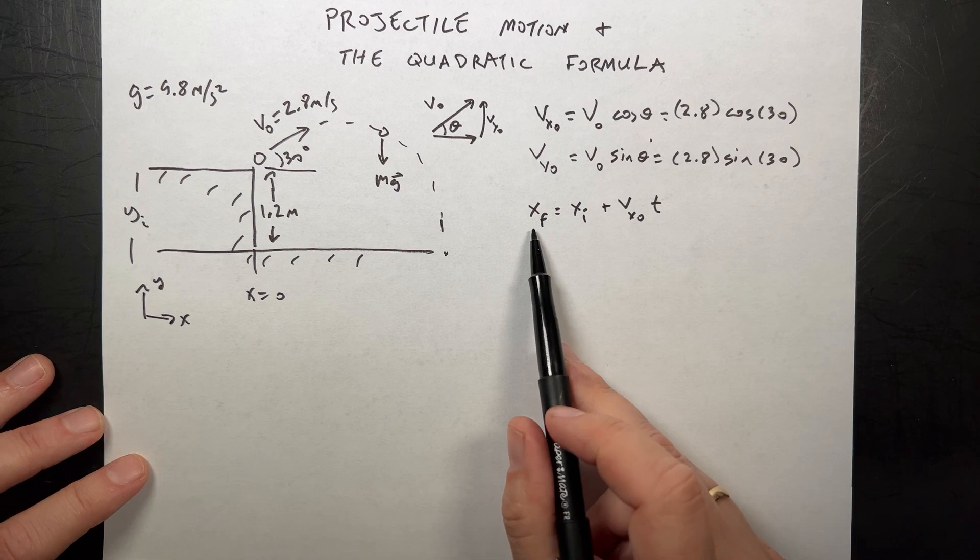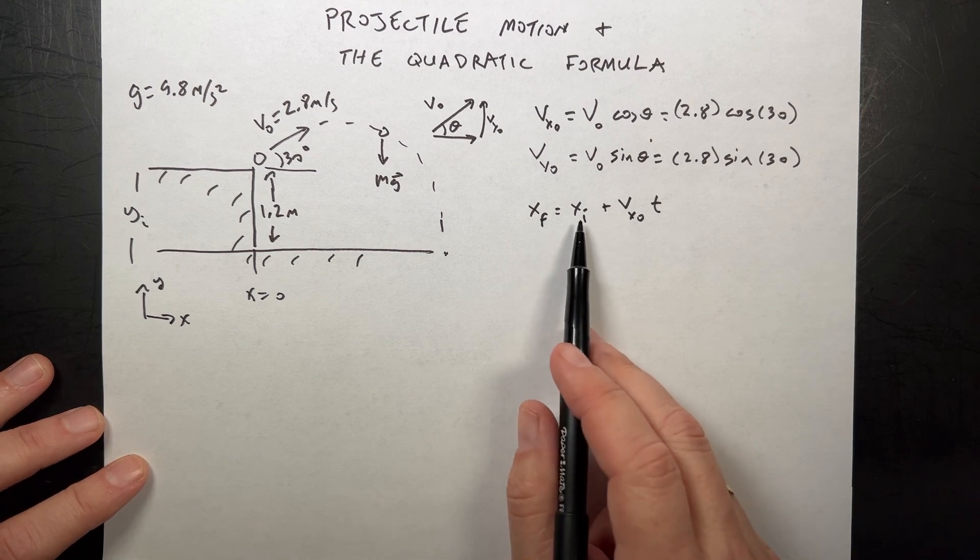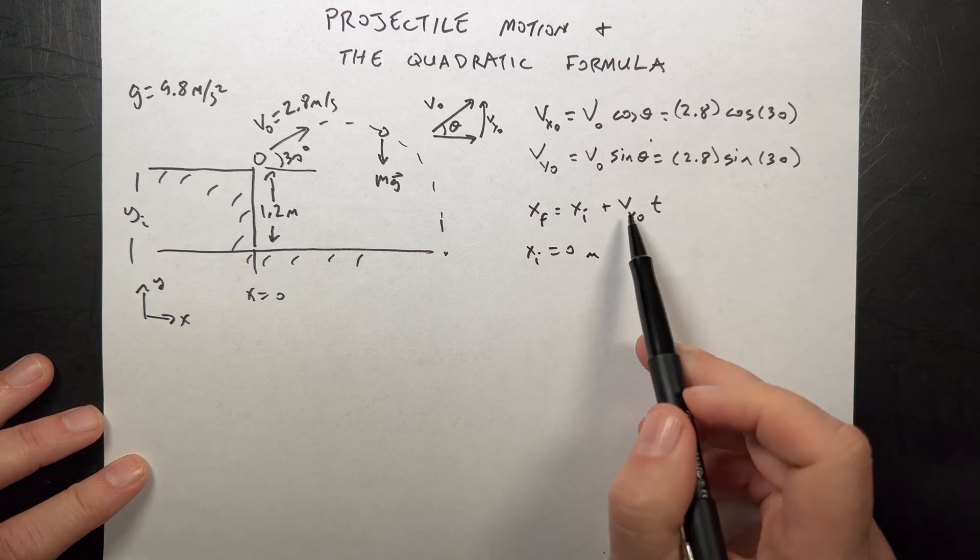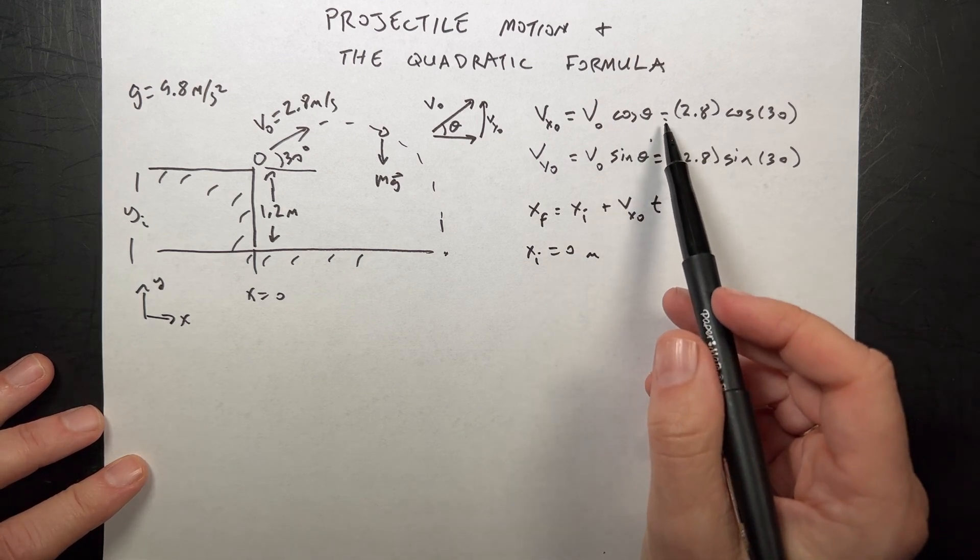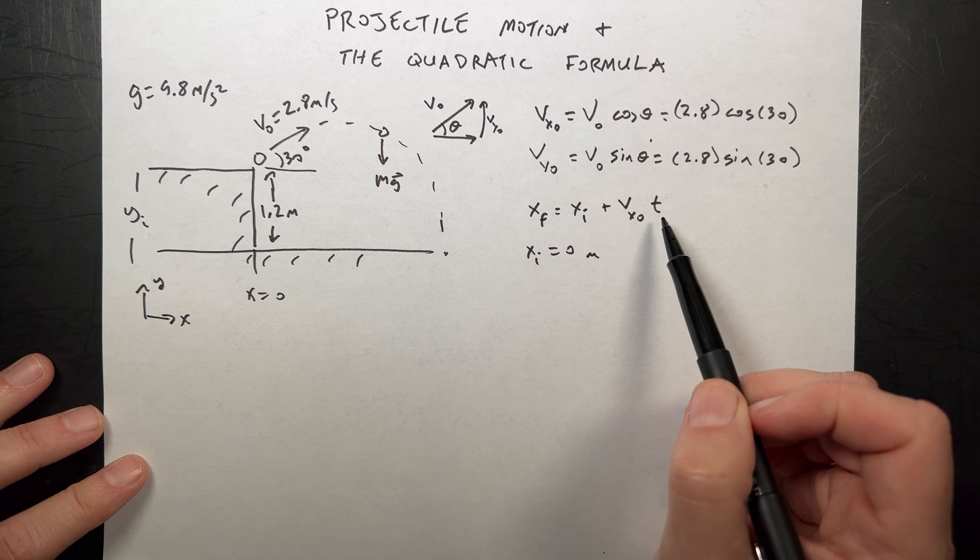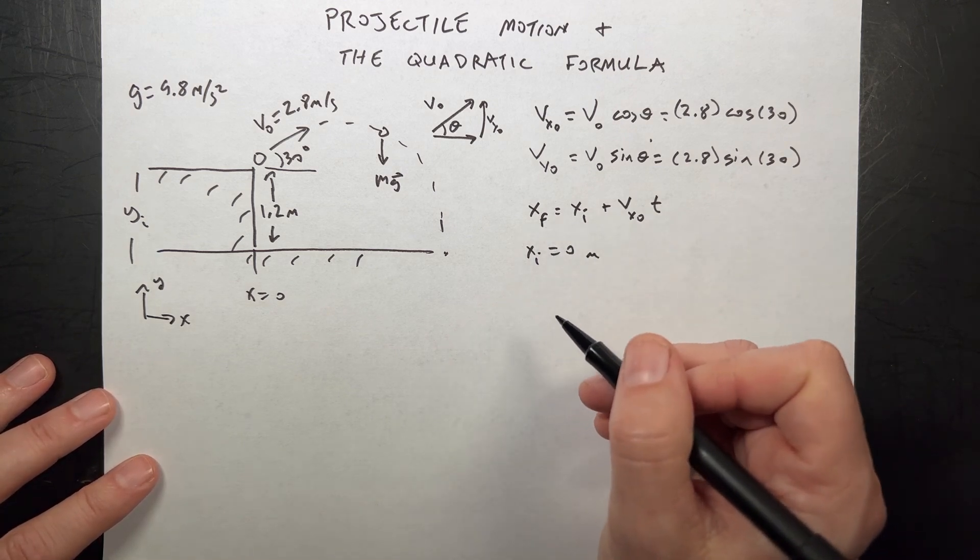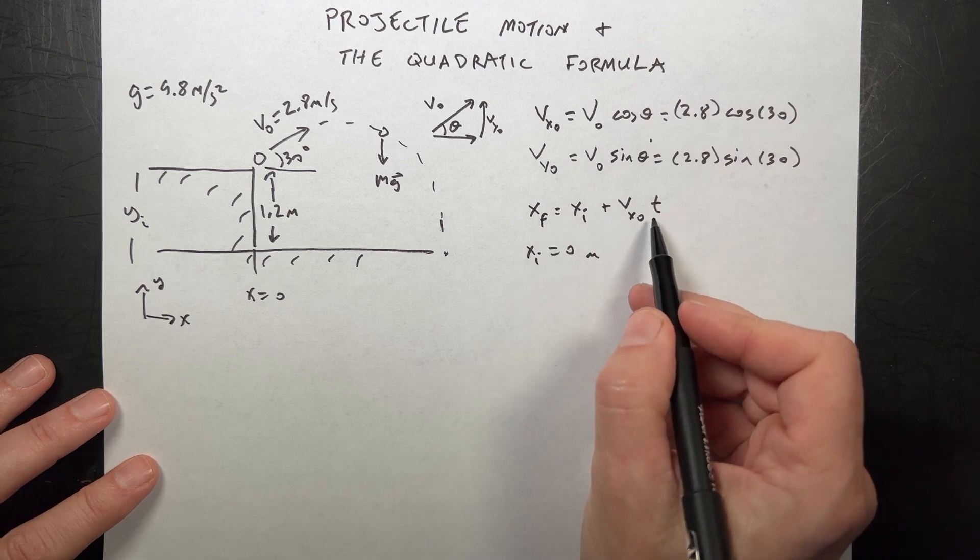If the acceleration is zero, I can write x final equals x initial plus vx initial times time. I could use this if I know my initial x is zero, x velocity which I do, and my time which I don't know. So the goal is we have to find the time.